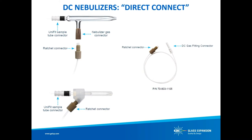Glass Expansion recently introduced the Direct Connection, or DC, gas line — an inert, metal-free, ICP-specific gas line upgrade for our U-Series nebulizer product line. The reliable ratchet click-and-seal fitting to the nebulizer gas arm ensures a leak-free gas connection by clicking or ratcheting when a proper seal has been achieved, preventing over-tightening. At the other end of the DC gas line is an ICP-specific quick-connect to the argon gas supply, helping to maintain optimal back pressure for consistent day-to-day nebulizer performance.